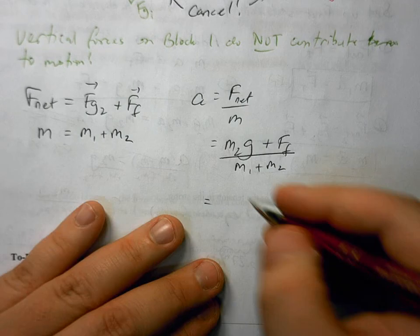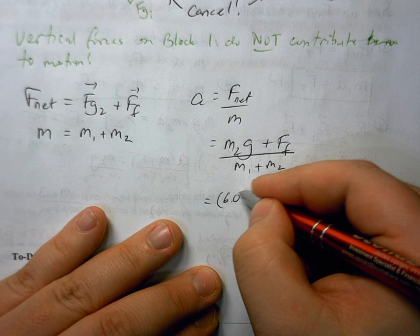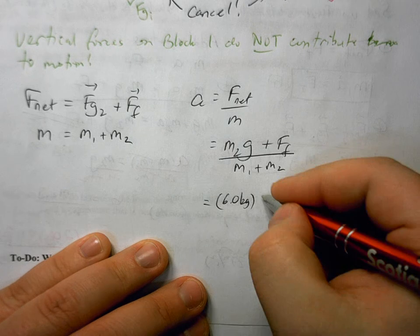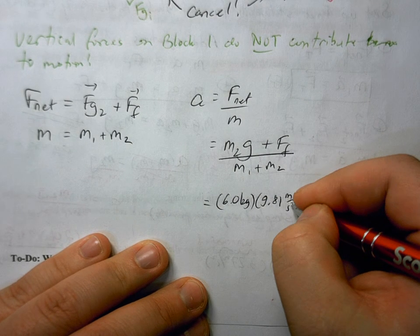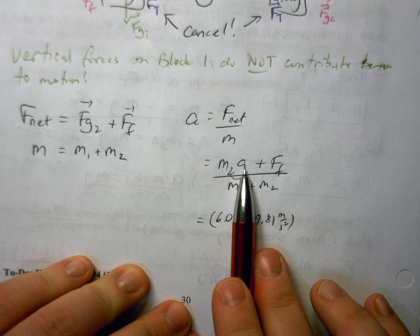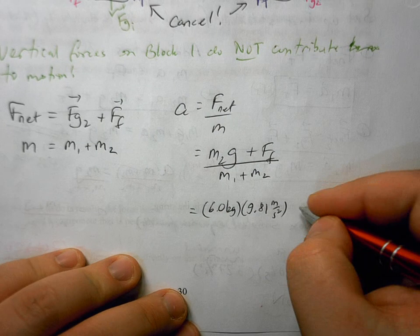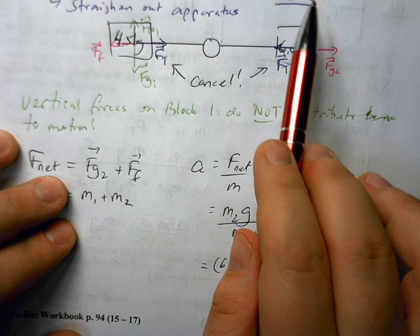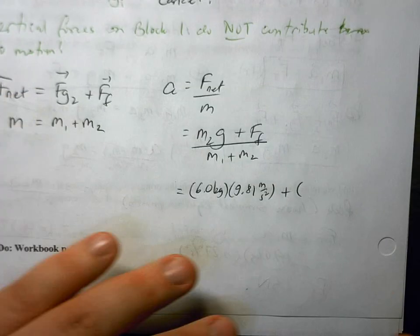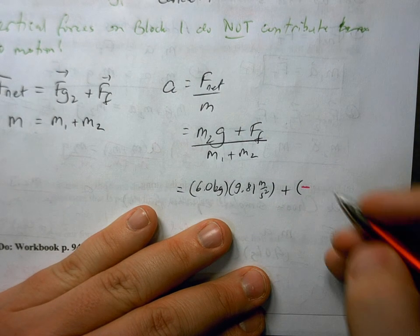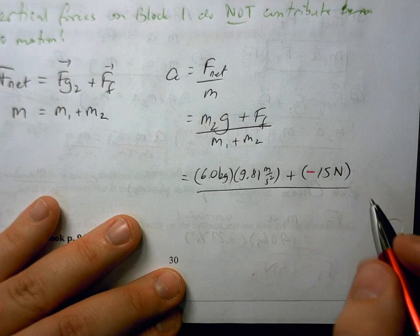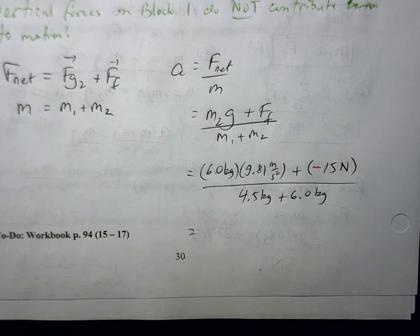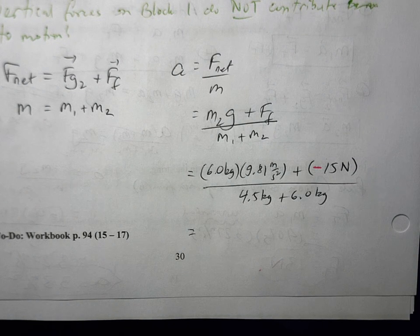So the only thing that we actually have to be careful with in this question is, first of all, we want that mass 2 there. That is what's hanging over the edge, and that's what's going to drive this system. And then we got this positive 9.81 meters per second squared since it's going in the direction of positive convention. And then to that, we're going to add the force of friction. But the force of friction is opposing our motion. It's going against our positive convention we've set. So that has to go in as a negative 15 Newtons. And then again, we're going to divide this by the total mass of the system. So we still always have to be mindful of directions when we're doing these problems. That's the big key here.